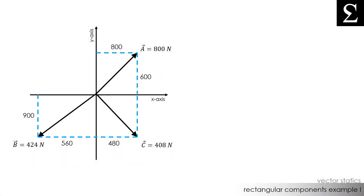Let's do an example so we can understand how rectangular components of vectors work and how we can use these components to find the resultant force. Here we have three forces acting on an object: Force A is 800 newtons, force B is 424 newtons, and force C is 408 newtons. I have drawn out the coordinate system as well as the distances each vector makes from the origin. We want to find the resultant force of these three forces using an analytical approach. The first thing we need to do is break these forces into their rectangular components using unit vectors i and j.